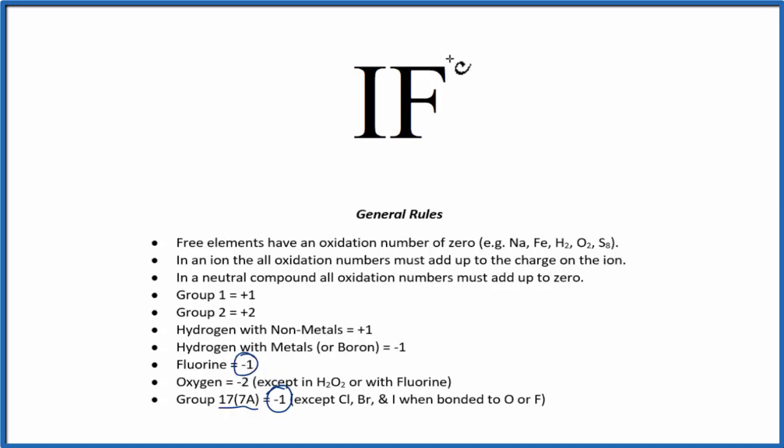So we know that fluorine is going to have a minus 1 oxidation number. And that iodine, that's not going to work for it to have a minus 1. And that's because when it's bonded to fluorine, it doesn't have a minus 1 charge. So that's an exception that you should remember.